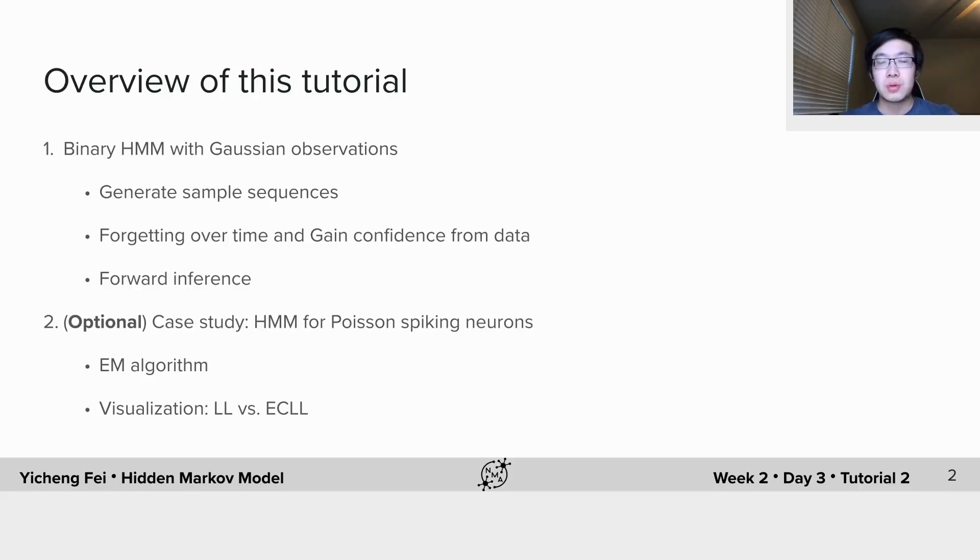In part two, we will focus on the example of Poisson spiking neurons mentioned in the intro lecture. Part two is optional and please make sure you have finished part one before proceeding. The code of this part is provided by the intro speaker Dr. Sean Ascola.